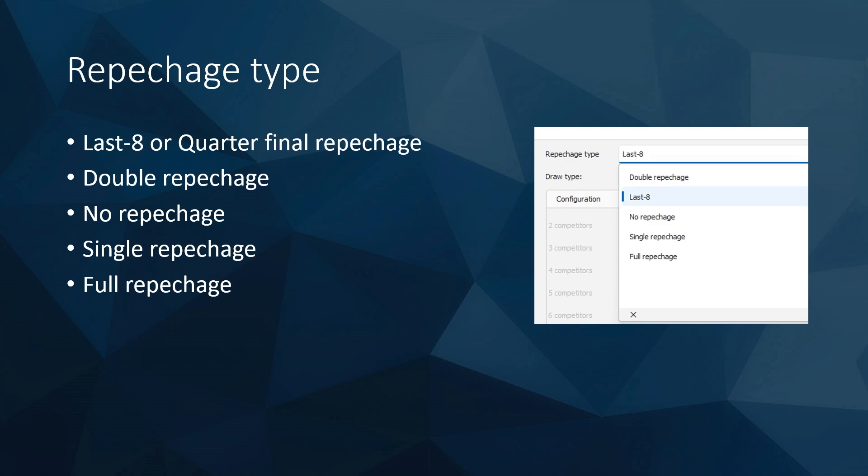The repressage type options the system offers are: last eight or quarter-final repressage, double repressage, no repressage, single repressage, and full repressage. For judo-based competition, it's usually last eight or double repressage, but in special occasions it can be no repressage or single repressage.